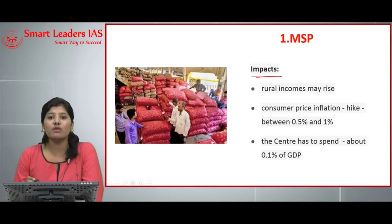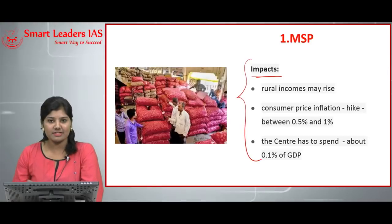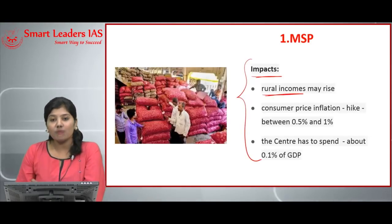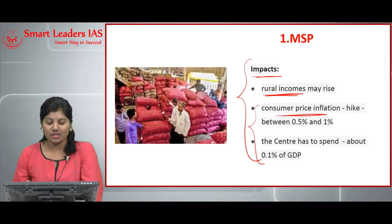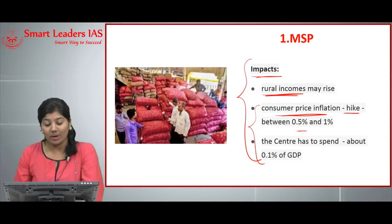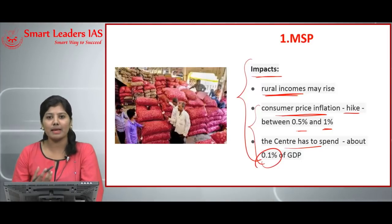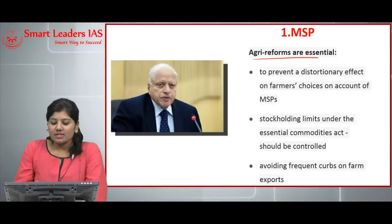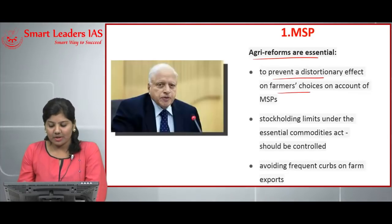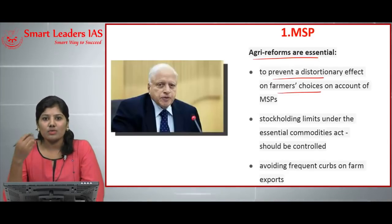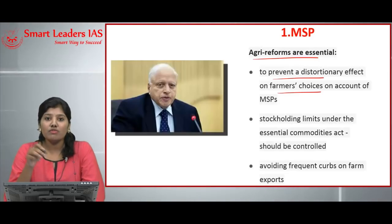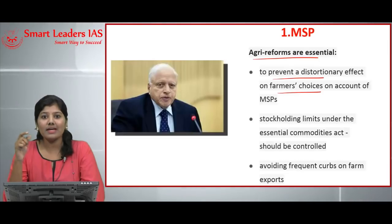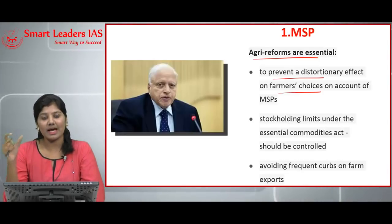If this hike in MSP gets implemented, the impacts would be: rural income for farmers may rise, but consumer price inflation could increase between 0.5 to 1 percent, and the center would also have to spend an extra 0.1 percent of GDP for procurement. Agricultural reforms are essential to prevent the distortionary effect on farmers' crop choices due to MSP — currently farmers tend to prefer crops with higher MSP rather than crops suited to their land, since the government announces MSP before the sowing season.